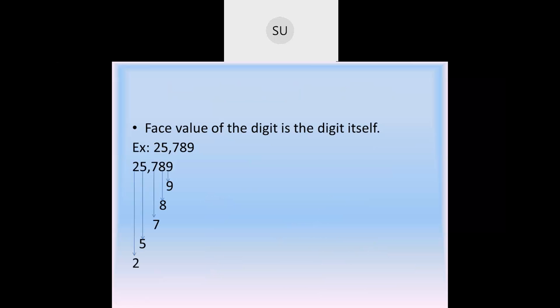Face value of a digit is the digit itself. Taking the example 25,789: face value of 9 in ones place is 9, face value of 8 in tens place is 8, 7 in hundreds place is 7, 5 in thousands place is 5, and 2 in ten-thousands place is 2. So this is place value and face value, and how to read a number.